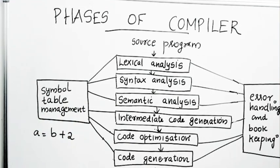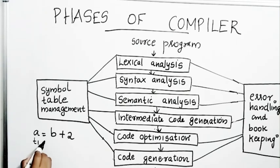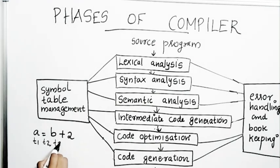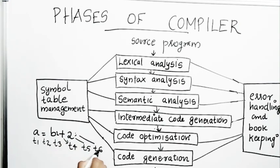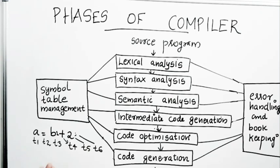For the statement 'a = b1 + 2', it will be broken down into different tokens: 'a' is token number one (a variable), '=' is token number two, 'b1' is token number three, '+' is token number four, '2' is token number five, and ';' is token number six. These are the different tokens that the lexical analyzer breaks the program into — meaningful units known as tokens.